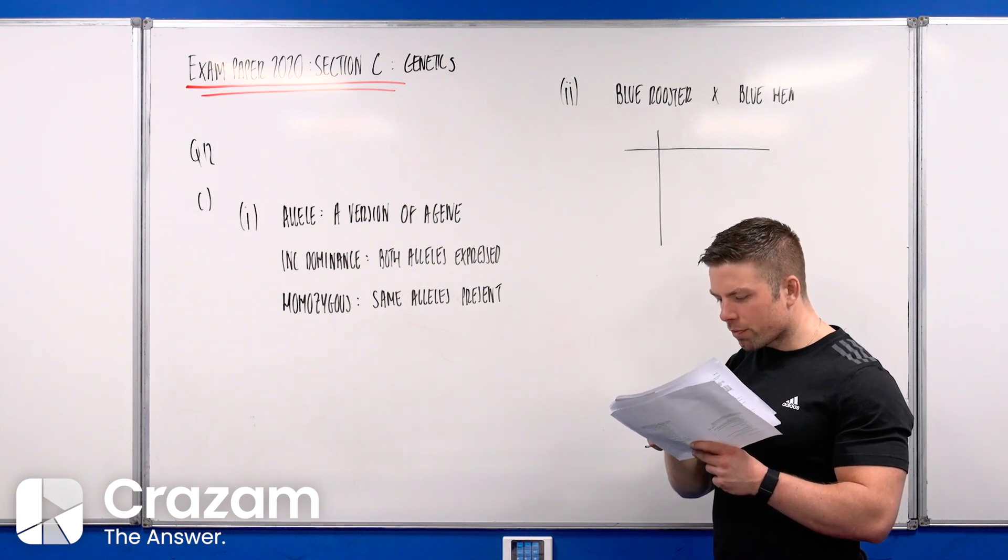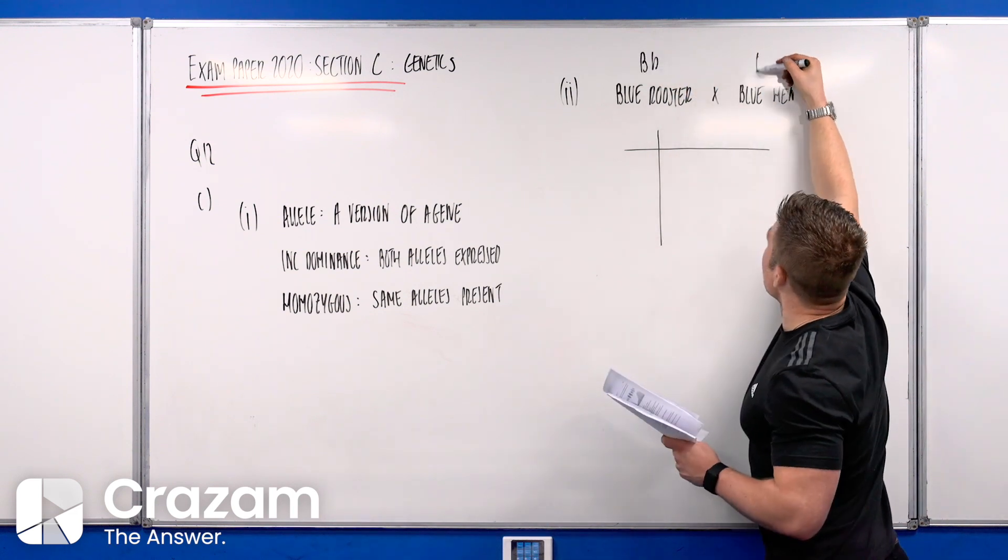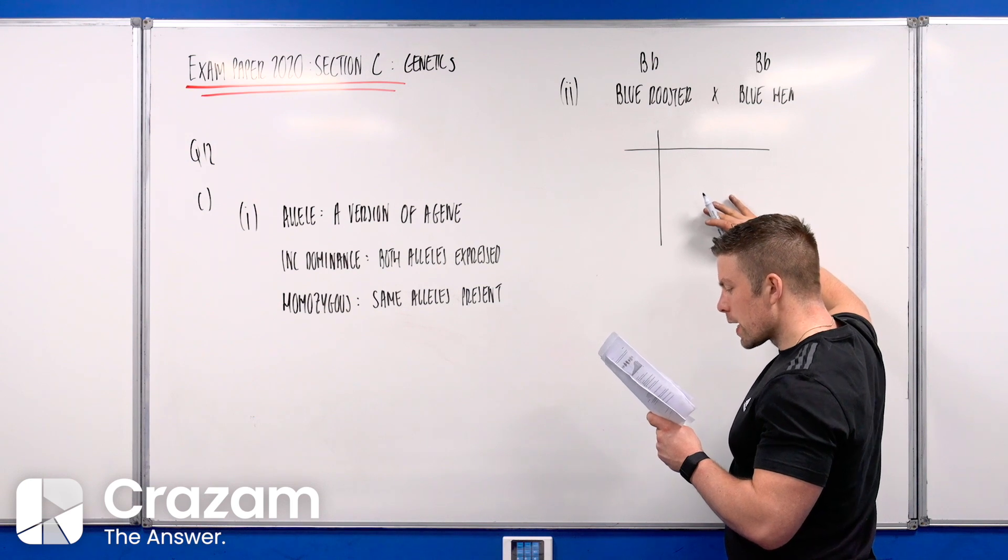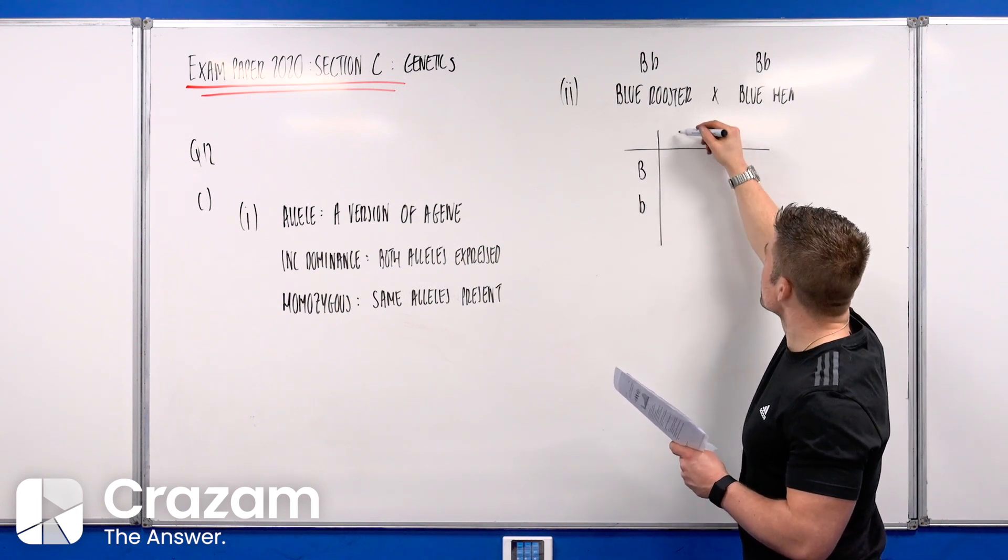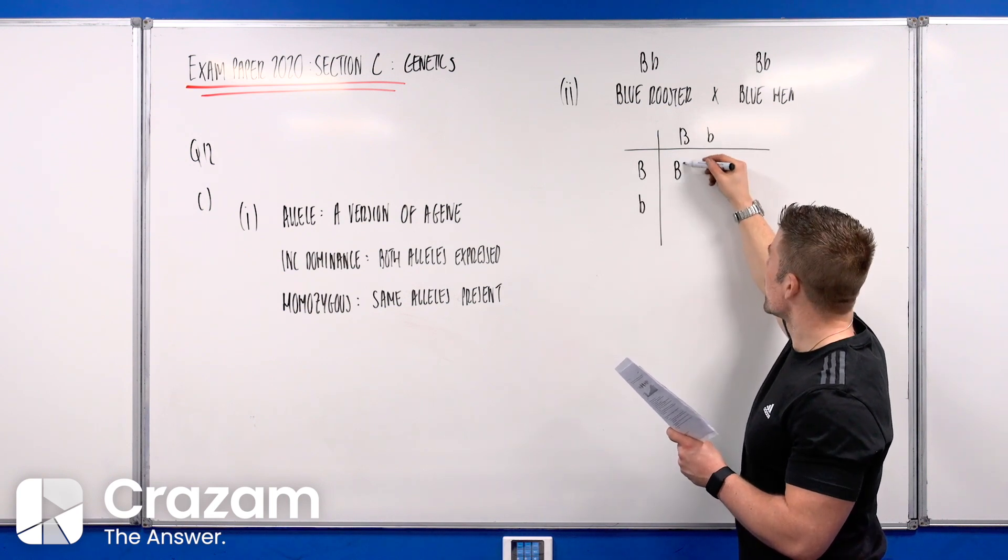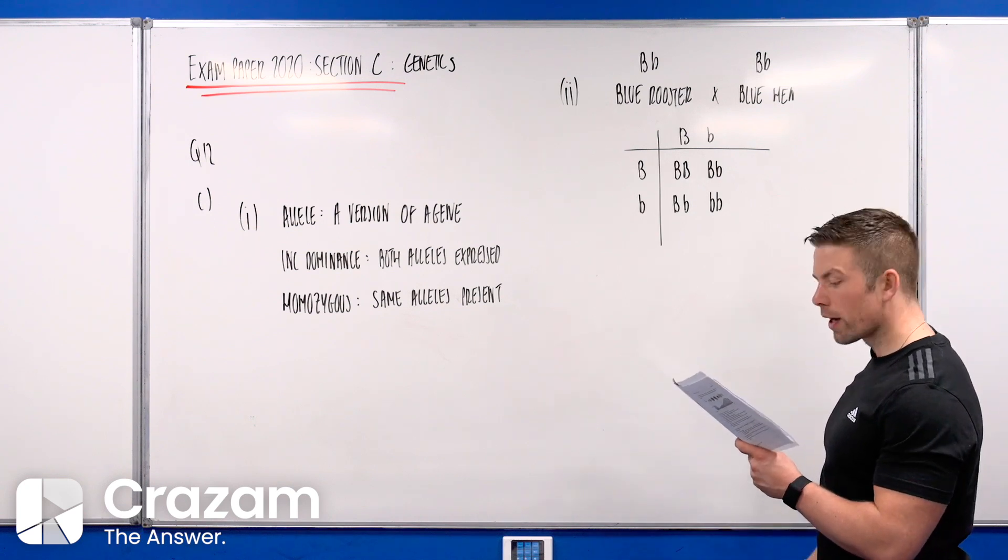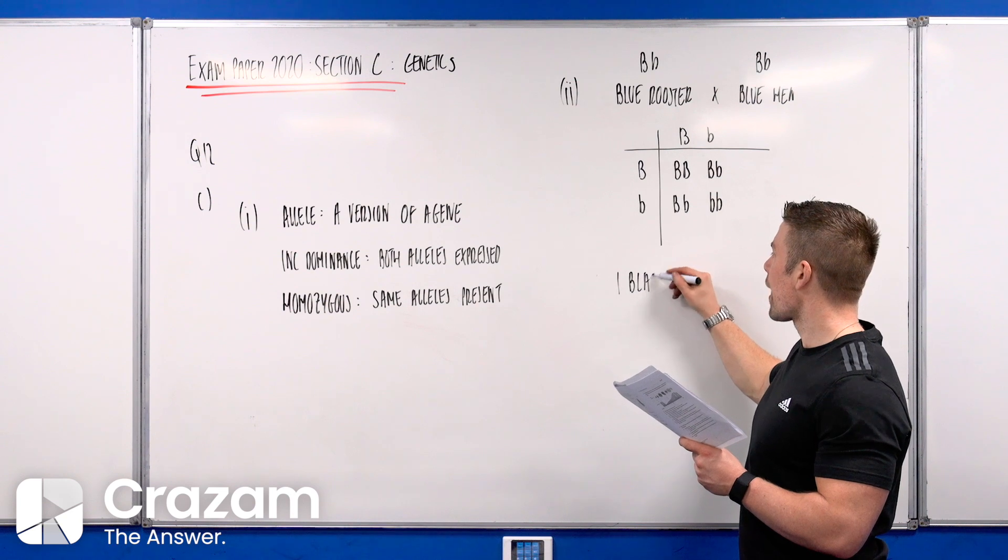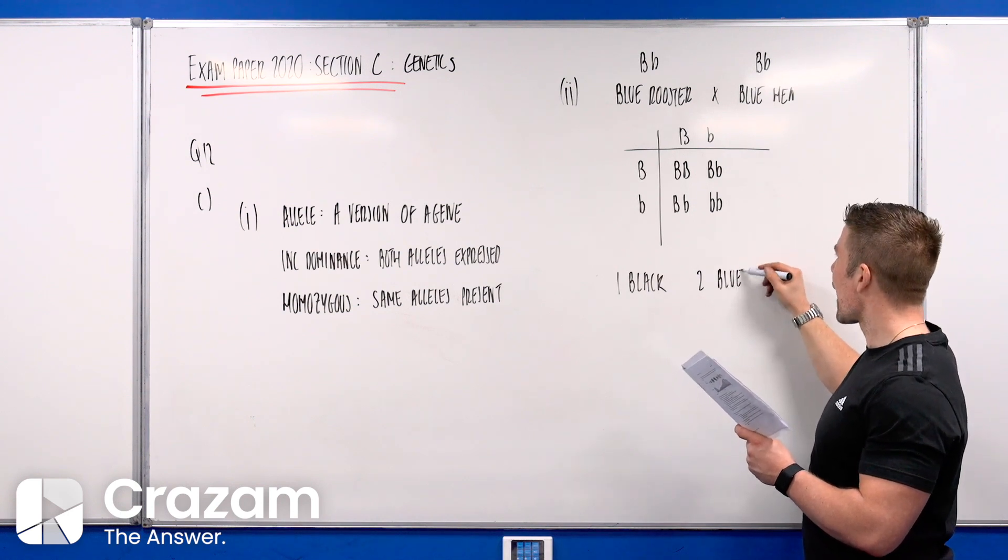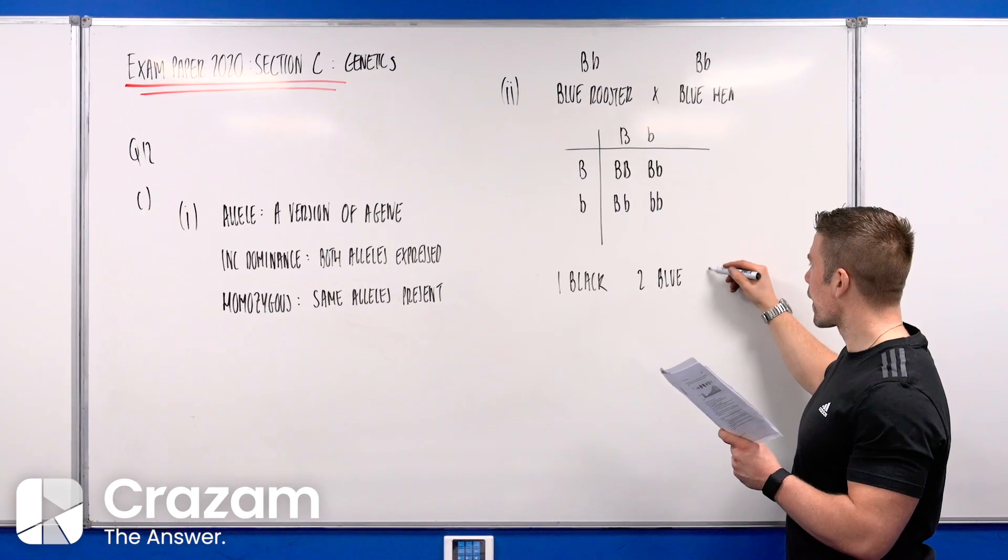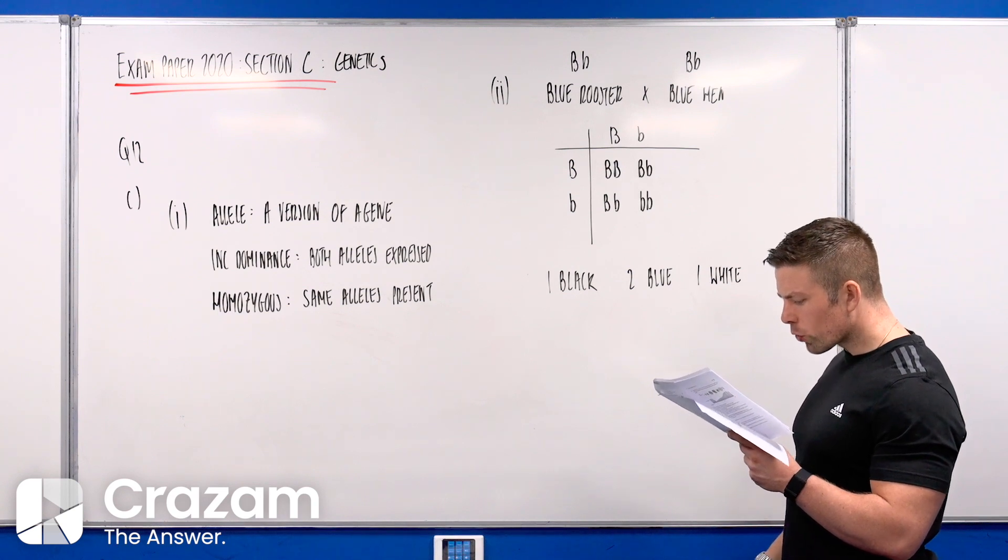All we do is cross them over. This can offer B or b, this can offer B or b. What comes from this is one capital B capital B, two capital B lowercase b, and two lowercase b. The ratio is one black, two blue or speckled, and one white.